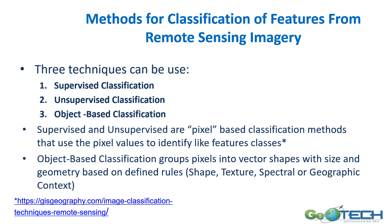There are methods for classifying what you're seeing in remote sensing imagery. Three techniques are used: supervised classification, unsupervised classification, and object-based classification. In unsupervised classification, the computer picks like pixels and groups them together and you decide what they represent. In supervised classification, you create a sample set — labeled as water, mountains, or other features — and tell the computer to cluster pixels accordingly. Object-based classification is becoming increasingly useful: it takes all those pixels and uses rules based on shape, texture, color, and graphic context to define what those features are.